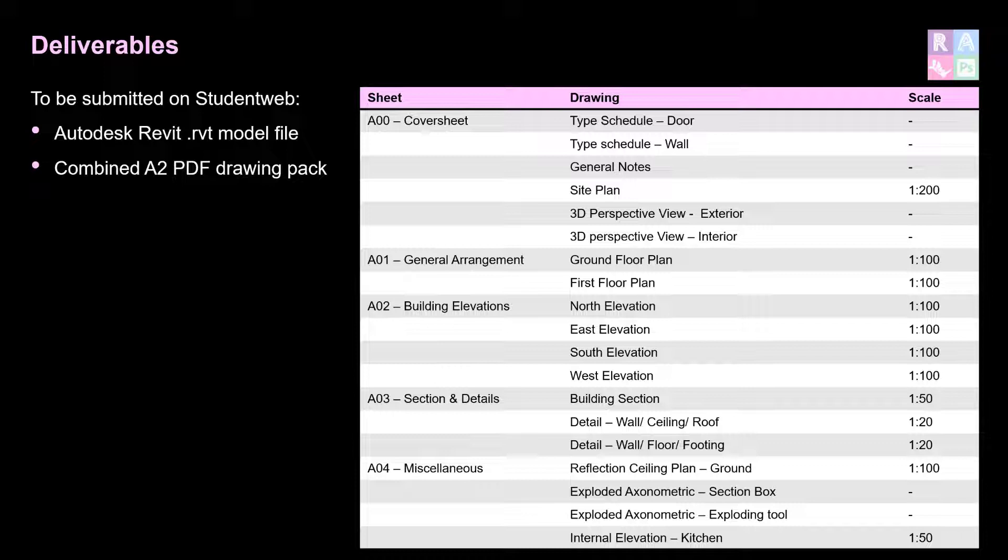The fifth and final sheet will be a set of miscellaneous drawings, which will include a reflected ceiling plan — an RCP — just for the ground floor at 1:100, two exploded axonometric views using two methodologies: one with the section box tool and the other with the exploding tool. The final drawing will be an internal elevation of the kitchen joinery unit at a scale of 1:50.